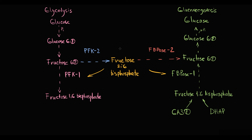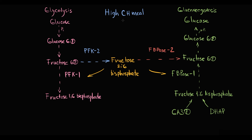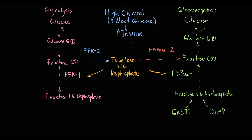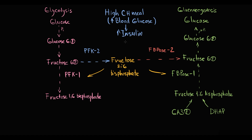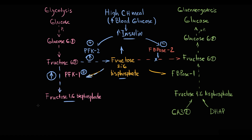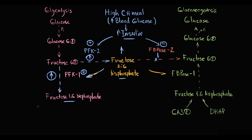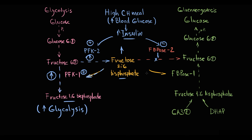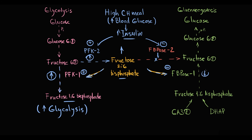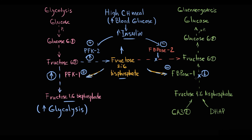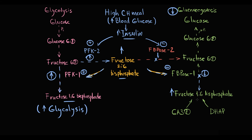Let's take a real situation. Assume we intake a high-carbohydrate meal — after glucose absorption, blood glucose level increases. Increased blood glucose stimulates secretion of insulin and decreases secretion of glucagon, so the acting hormone is insulin. Insulin stimulates PFK2 and inhibits FBPase2, resulting in increasing fructose-2,6-bisphosphate level. This stimulates PFK1, so more fructose-6-phosphate molecules are converted into fructose-1,6-bisphosphate, increasing glycolysis activity. Increasing fructose-2,6-bisphosphate also inhibits FBPase1, blocking conversion of fructose-1,6-bisphosphate into fructose-6-phosphate. Inhibition of gluconeogenesis results in accumulation of fructose-1,6-bisphosphate that undergoes degradation in glycolysis.